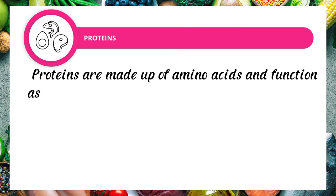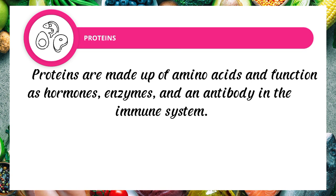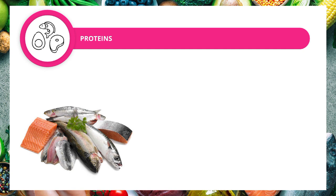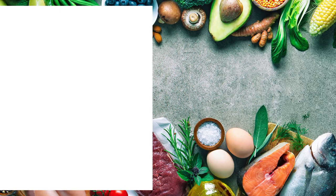The next macronutrient is proteins. Proteins are made up of amino acids and function as hormones, enzymes, and antibodies in the immune system. They make up parts of the bodily structures like connective tissues, skin, hair, and muscle fibers. We can get proteins from fish, eggs, meat, fields, and nuts.